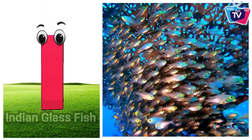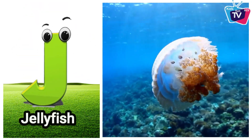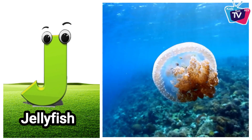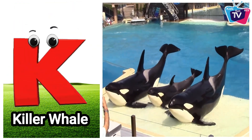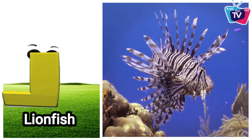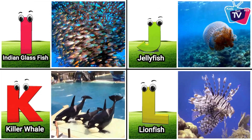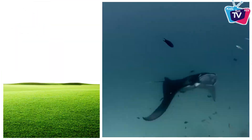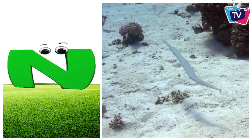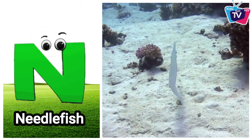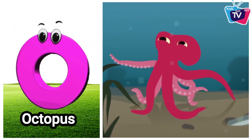I is for Indian Glass Fish. J is for Jellyfish. K is for Killer Whale. L is for Lionfish. M is for Manta Ray. N is for Needle Fish. O is for Octopus.